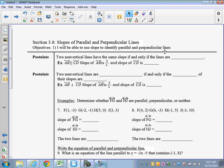The first one says two non-vertical lines have the same slope if and only if the lines are parallel. For an example, line AB is parallel to line CD, and the slope of line AB is 3 over 5. So the slope of CD is what? Well, since we have that they're parallel, we know that they have to be the same, so it has to be 3 over 5.